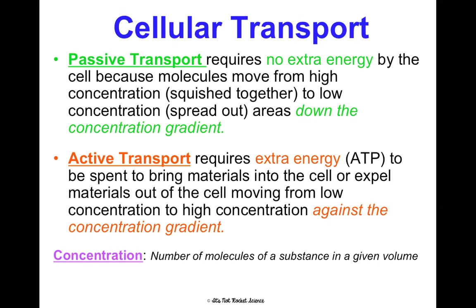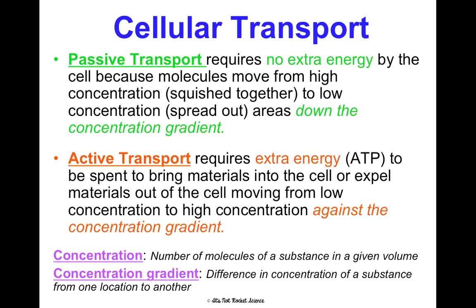Concentration is the number of molecules of a substance in a given volume. The concentration gradient is the difference in concentration of a substance in one location versus another. If lemonade is highly concentrated, it has a lot of solute — a lot of lemonade powder — and it would be really strong and sweet. Low concentration means not a lot of powder dissolved, so it would be really weak and watery. We'll be referring to this a lot in the rest of these notes.